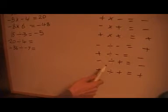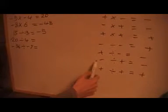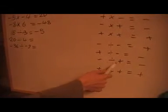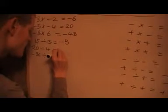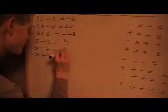Now we've got minus 20 divided by 4. We know that 20 divided by 4 is 5. Looking at the rules, a minus divided by a plus is negative. So the answer is minus 5 again.